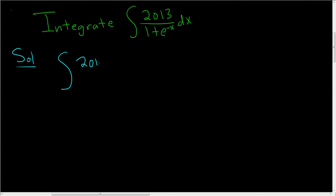So let's rewrite it as 2013 over 1 plus e to the negative x. And what we'll do is we'll multiply by e to the x over e to the x. And when you do that, something amazing happens.